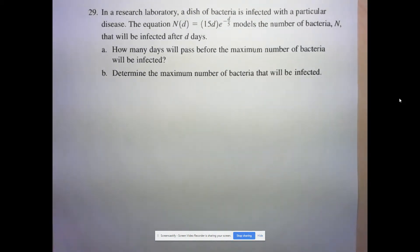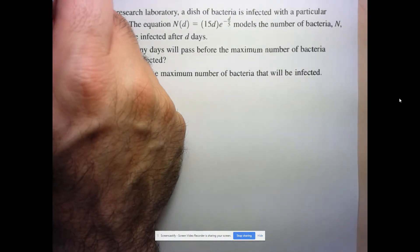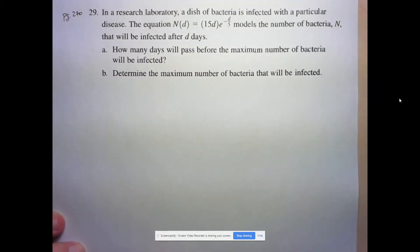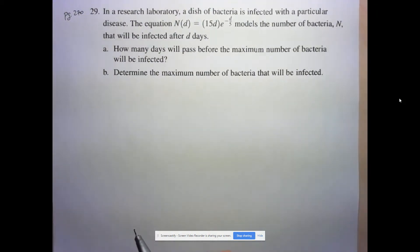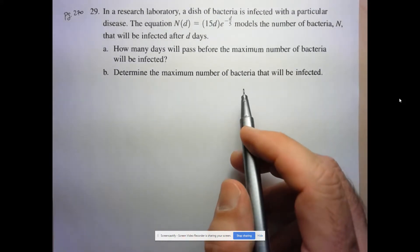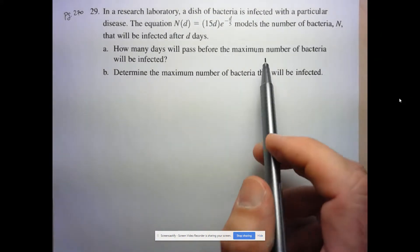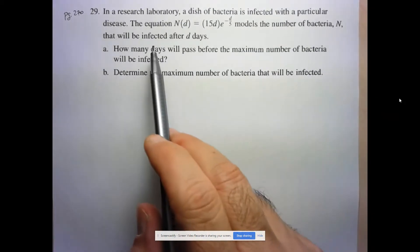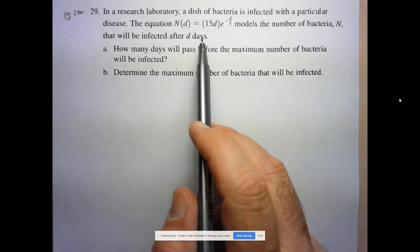Hi folks, we're going to take a look at page 270, number 29. So let's see what's going on here. We've got a dish of bacteria which is infected with a disease and this equation models the number of bacteria that will have the disease after D days.